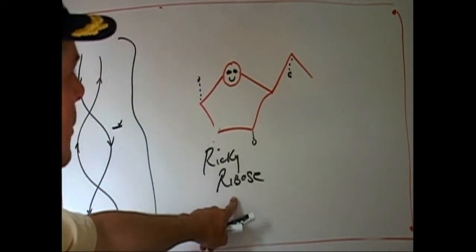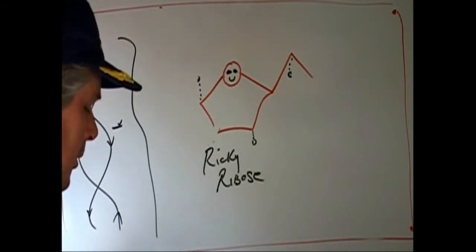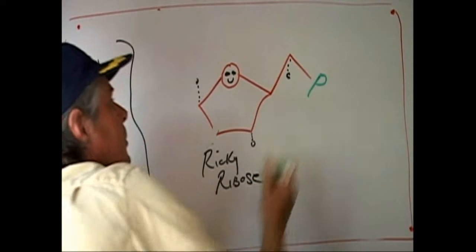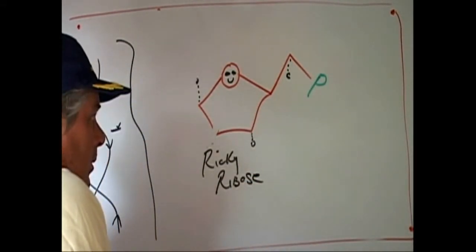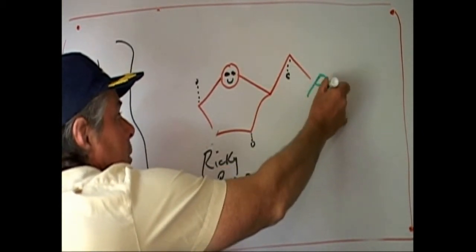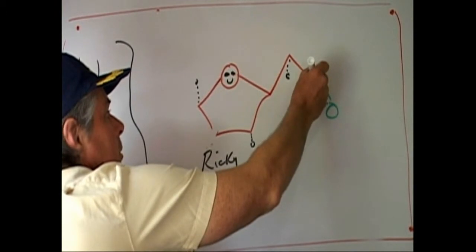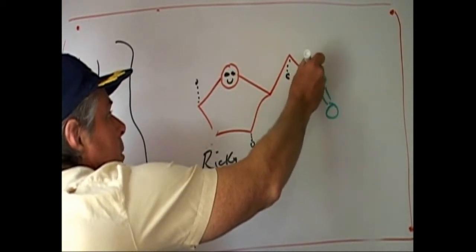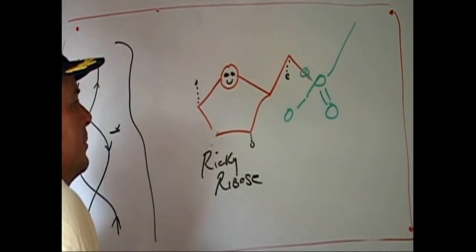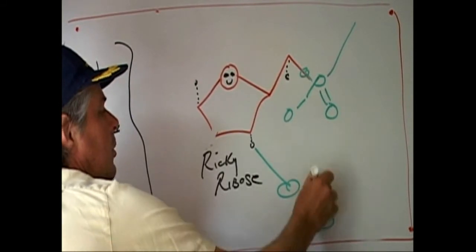So, we've got the ribose. Now the phosphate backbone. Phosphorus, we'll give it a green color here. And we'll give the oxygen green. There's going to be a phosphate here. It's going to have a double bond to an oxygen, single bond to an oxygen, single bond, single bond. And then, it's going to go up and bond another one. Down here. O, P, O, O, O, O.